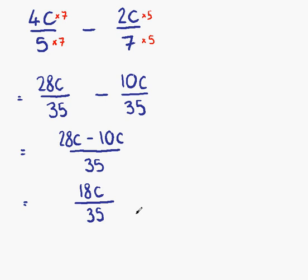Our new fraction is 18c over 35. The next thing we normally need to do is check to see if the fraction can be simplified. In this case, the fraction can't be simplified, so this is our final answer.